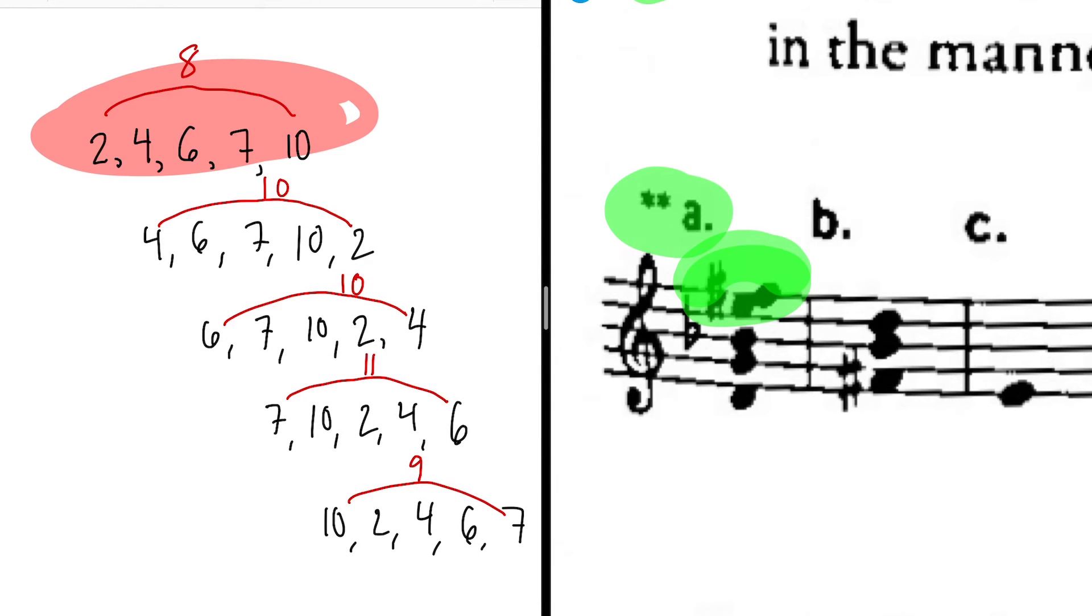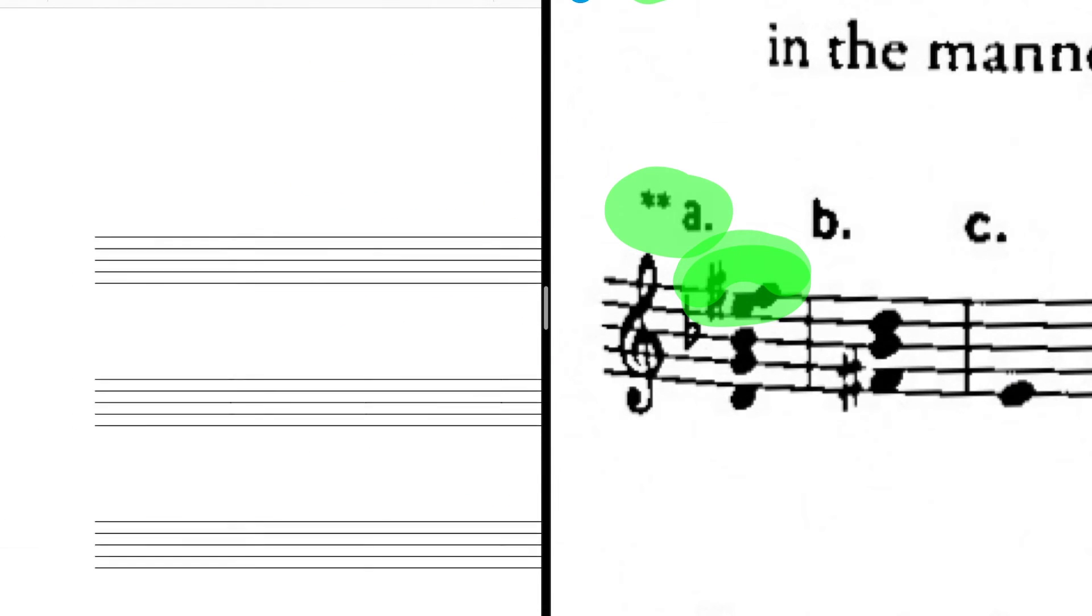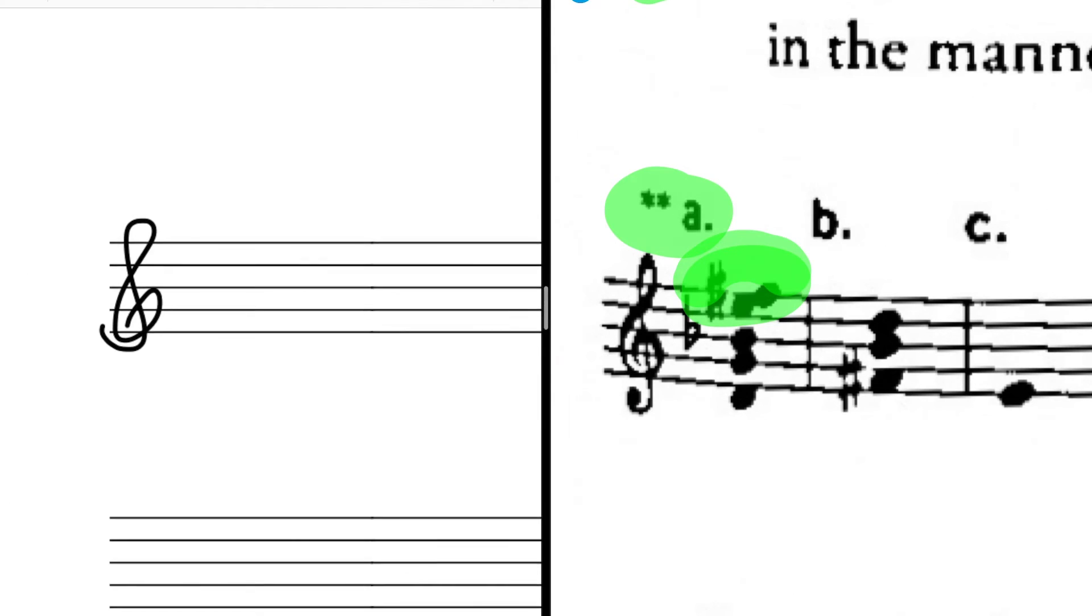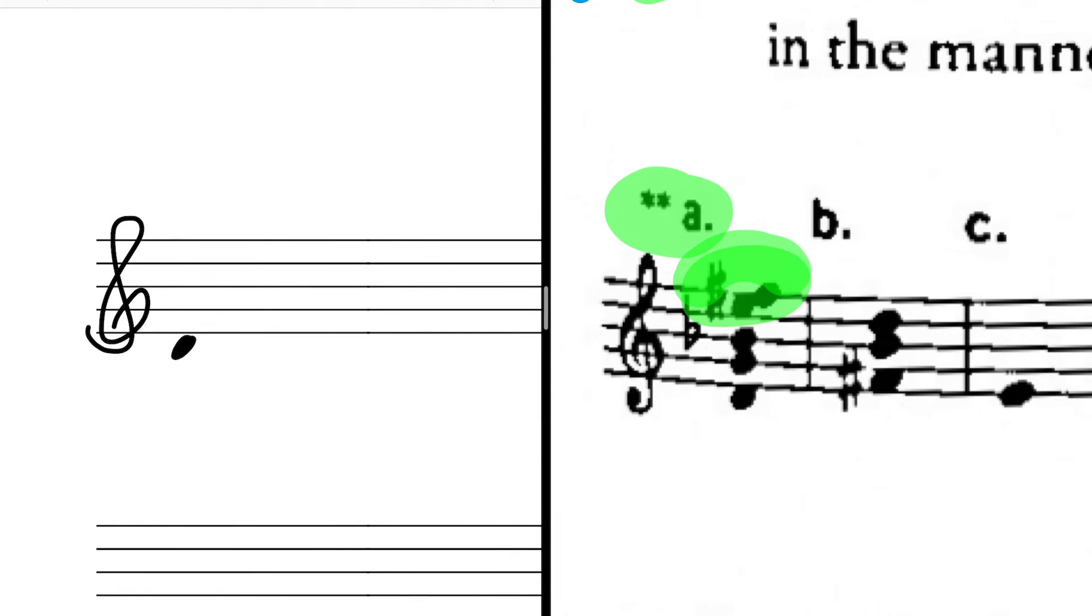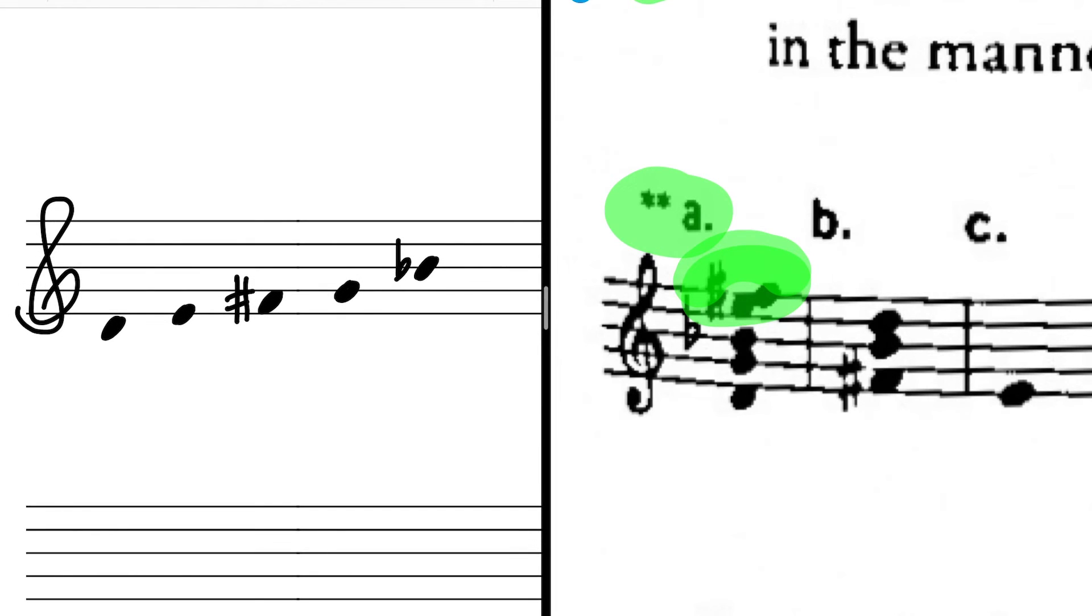Now instead of writing it in square brackets, the instructions have asked you to put it on the staff, ascending in the manner of a scale. So let's take 2, 4, 6, 7, 10 and write it on the staff. 2, 4, 6, 7, 10. There's your answer for 1.1.a.